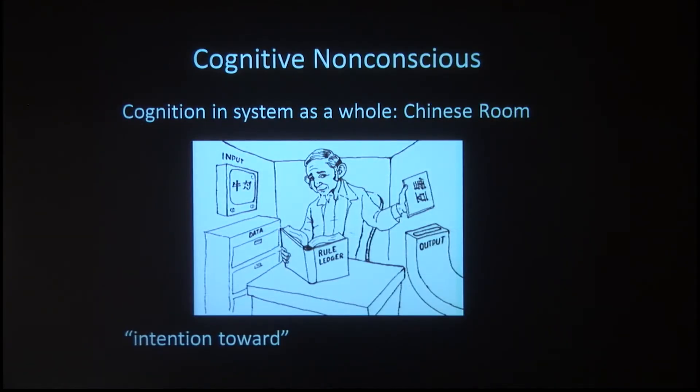I'll begin with John Searle's famous Chinese room thought experiment. Searle intended this as an example showing why computers can't actually think. In the Chinese room, there's a man who sits there. Through one slot in the door, he gets a string of Chinese characters. He has a rule book, and using it, he makes some changes in the string and puts his modified string in the output. Someone on the outside has asked a question in Chinese, and the output is the answer. What Searle meant to illustrate was that what we call thought in computers is just this sterile and mechanical matching process.